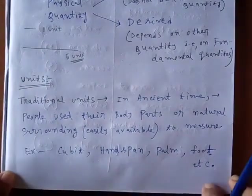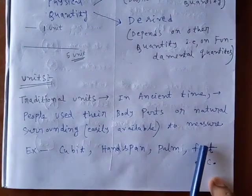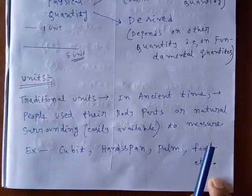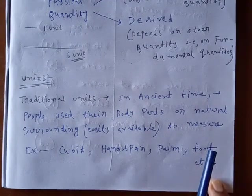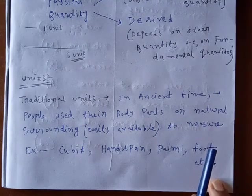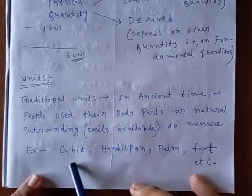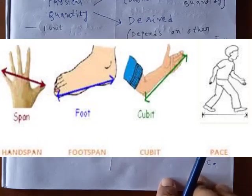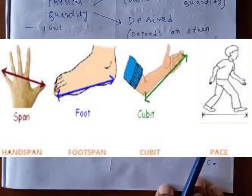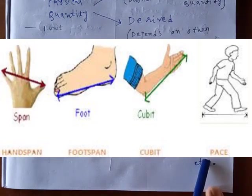Now move to the units. In ancient time, we know that people usually use their body parts or any natural surroundings available easily to measure the length, weight or something. Suppose there are some examples. For example, cubit, hand span, foot. Basically cubit is the length between our fingertip and elbow. And hand span is the length between our thumb and the last finger. And foot is the length of an adult person's bare foot. Those are the units used by the ancient man.